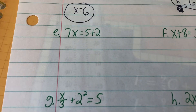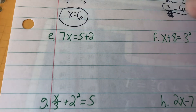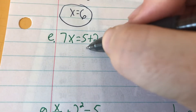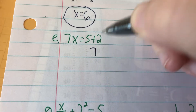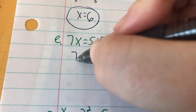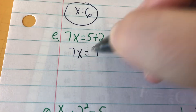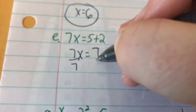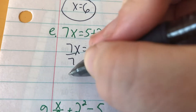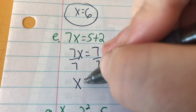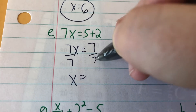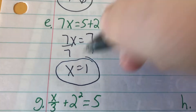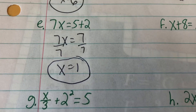On E, we have 7x equals 5 plus 2. 5 plus 2 equals 7, so 7x equals 7. Divide both sides by 7. 7 divided by 7 is 1, so x equals 1.